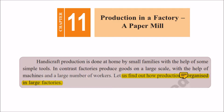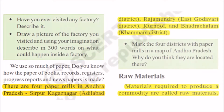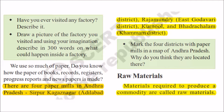We'll discuss the paper industry and how paper industry production is done in our state, Andhra Pradesh. We have four paper mills in our state: one is at Sirpur Kagasnagar in Adilabad district, the second one is at Rajahmundry in East Godavari district, the third is at Kurnool, and the last one is at Bhadrachalam.